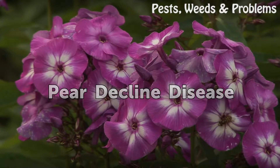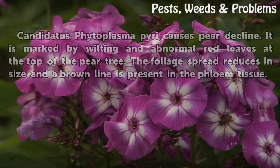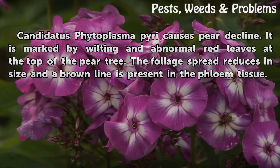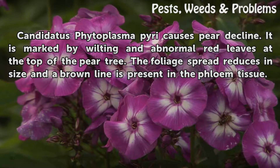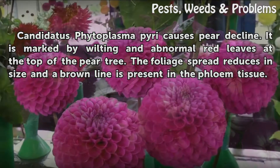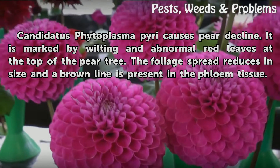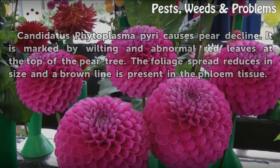Pear Decline Disease. Candidatus phytoplasma pyri causes pear decline. It is marked by wilting and abnormal red leaves at the top of the pear tree. The foliage spread reduces in size and a brown line is present in the phloem tissue.